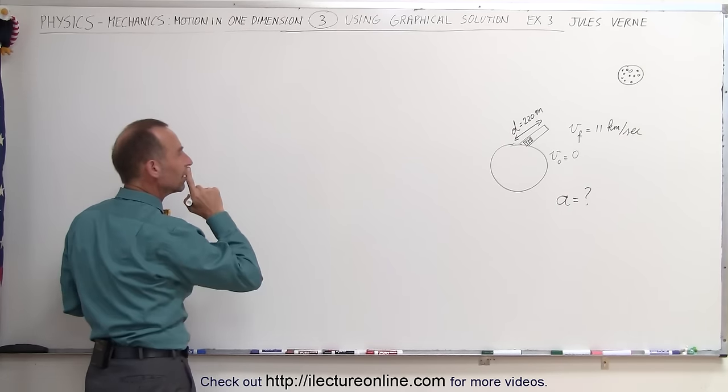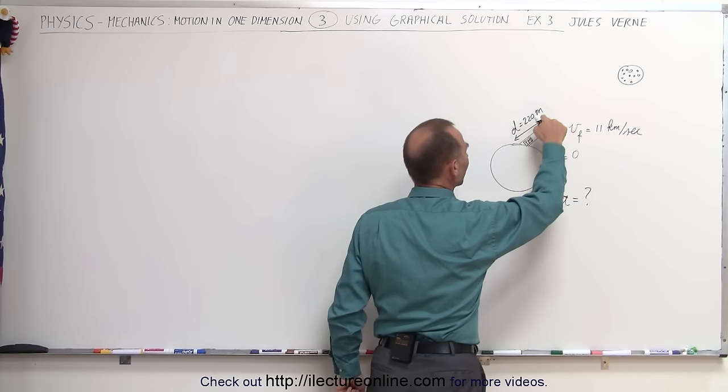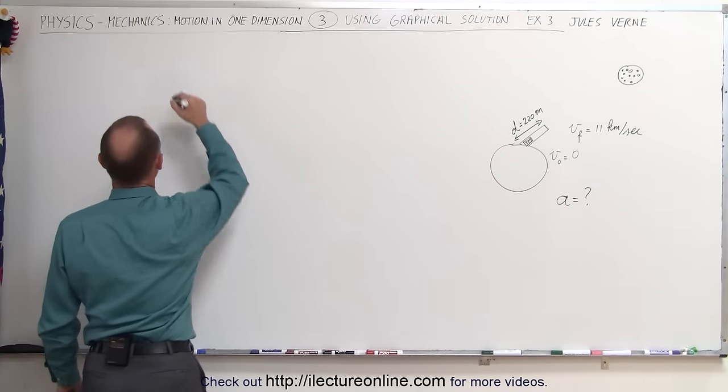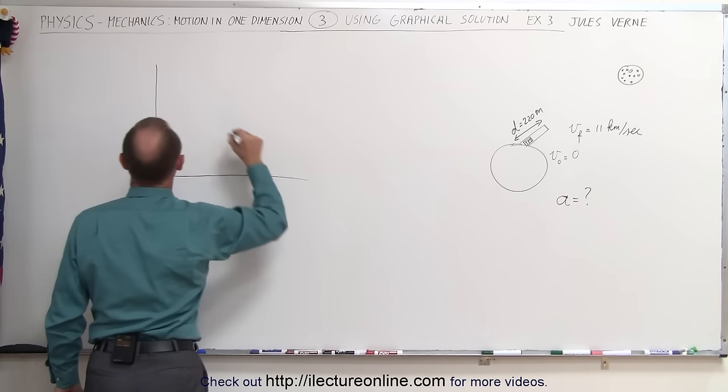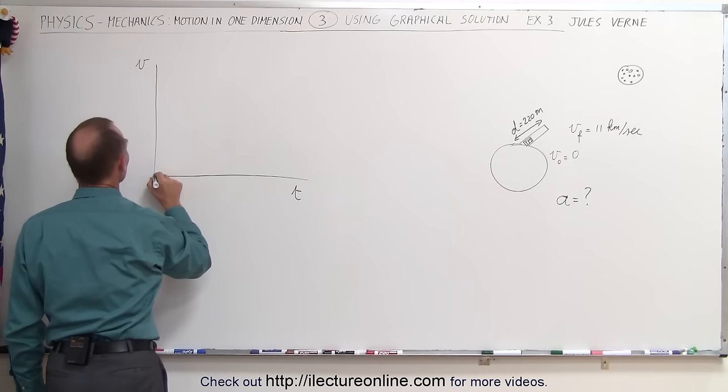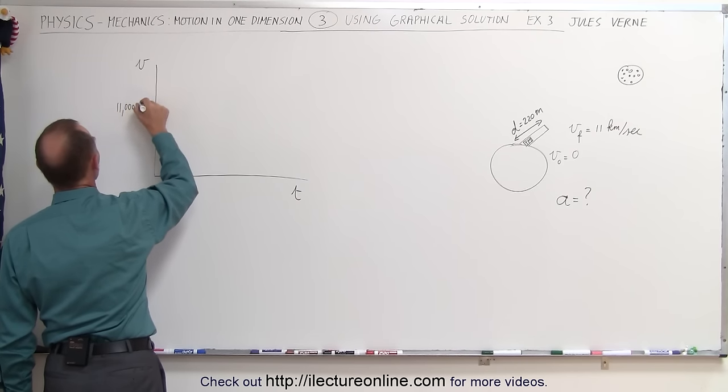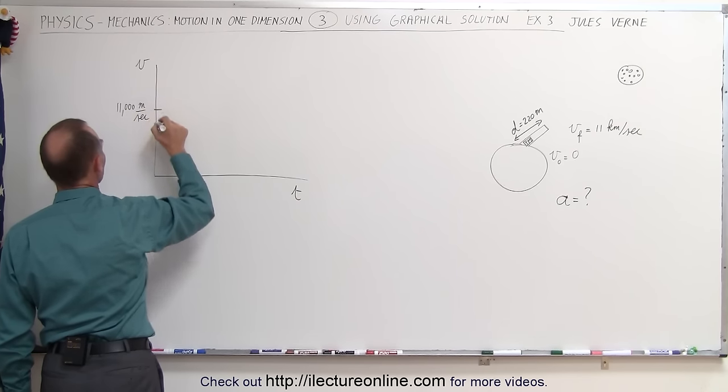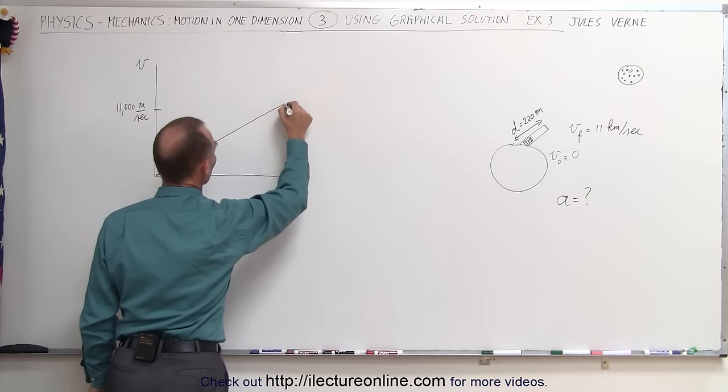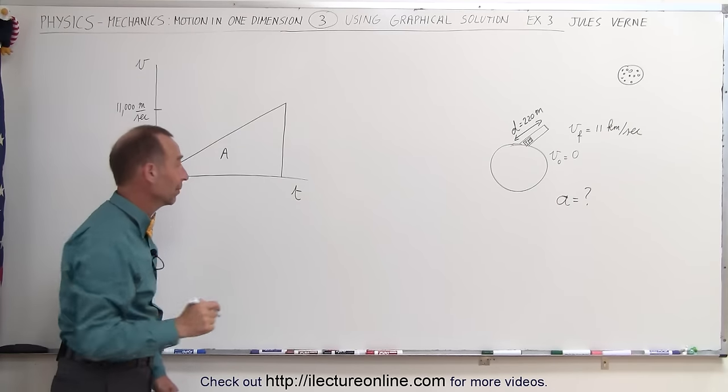We have the change in velocity and the distance, so I'll graph a velocity versus time graph. We start from zero and go up to 11,000 meters per second in a certain amount of time. I don't know what the time is, but I do know that the area underneath the curve is the distance traveled during that time.